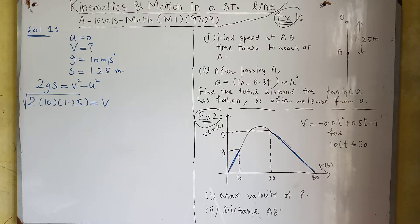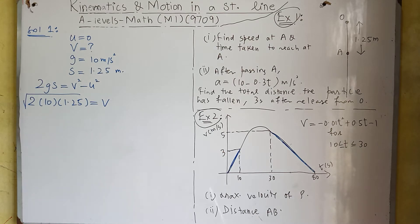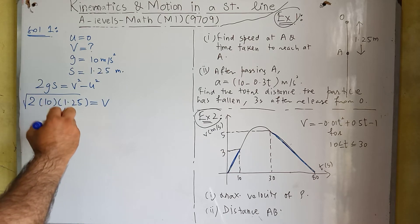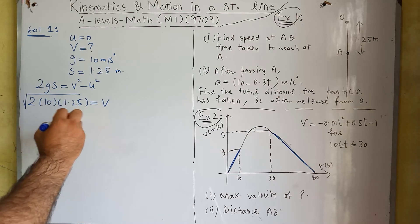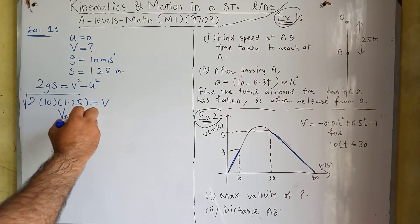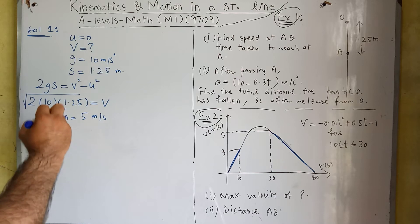Calculating: 2 × 10 × 1.25 gives us v² = 25, so the velocity of the body at A is 5 meters per second.